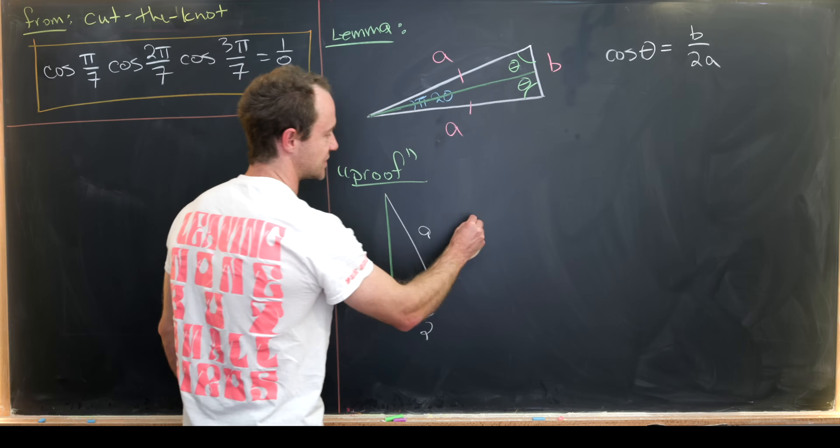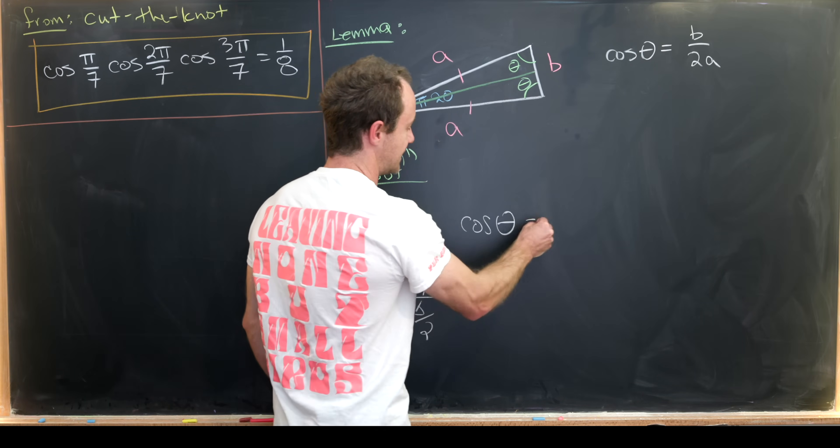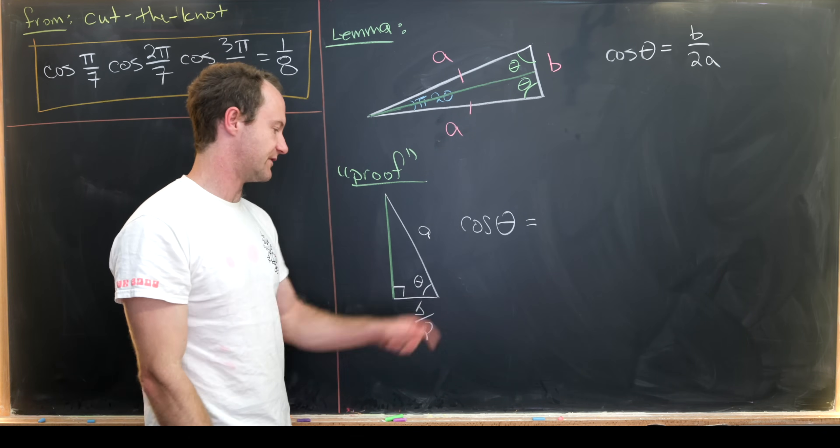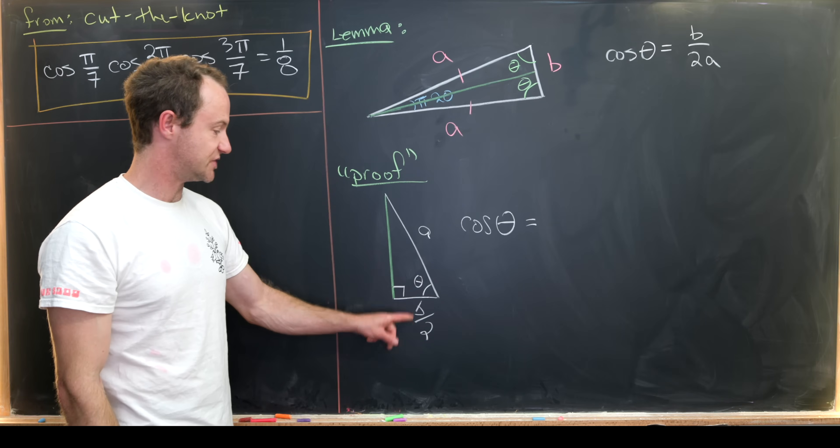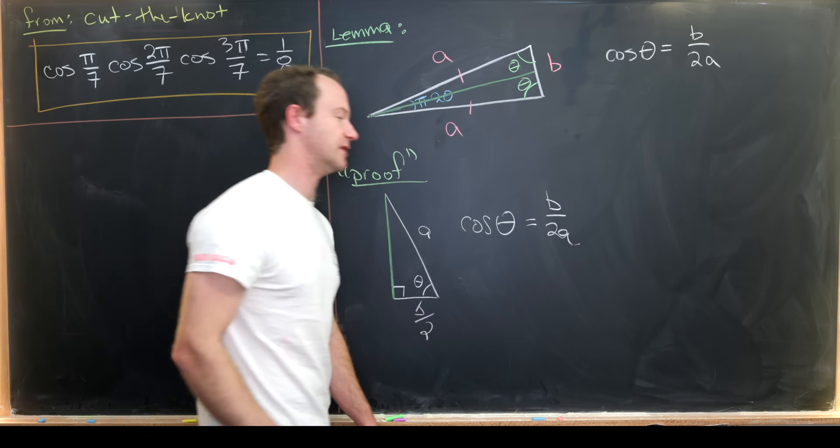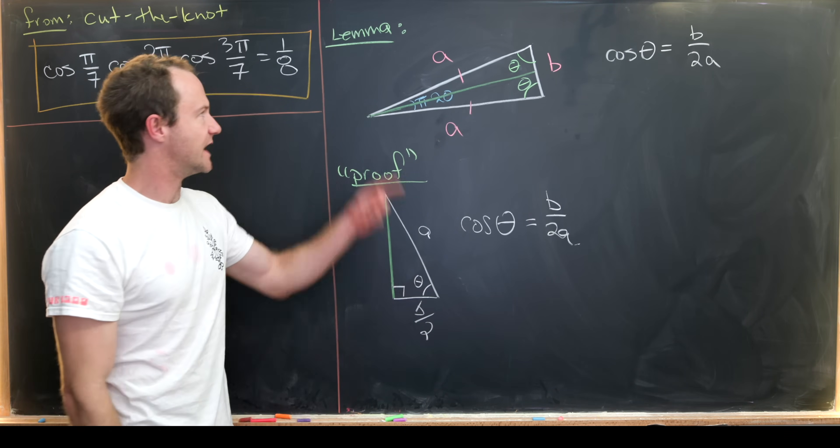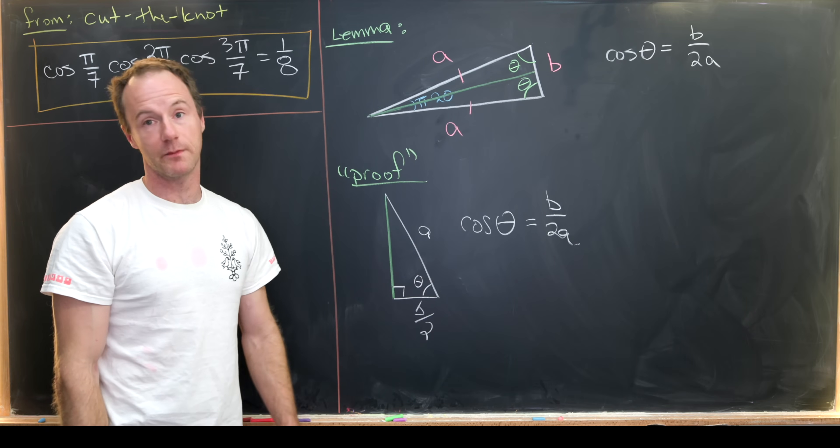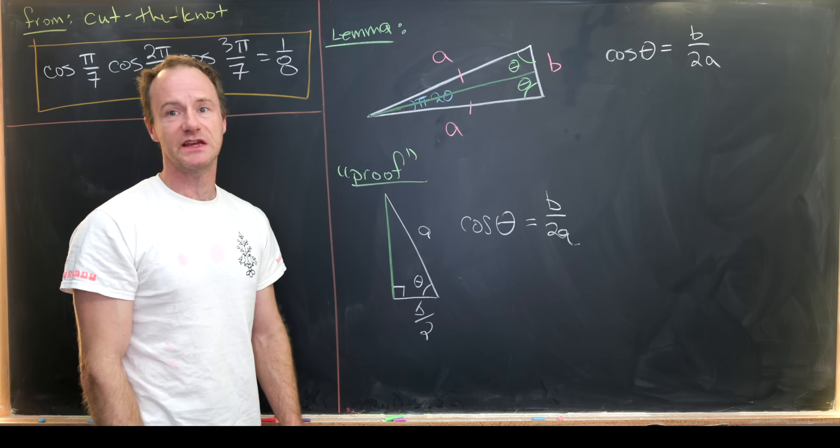And now we can just pull off the definition of cosine theta. So it's adjacent divided by hypotenuse. So that gives us b over 2a in this case. Okay so now that we've got this nice warm-up under our belt let's maybe get to the solution.